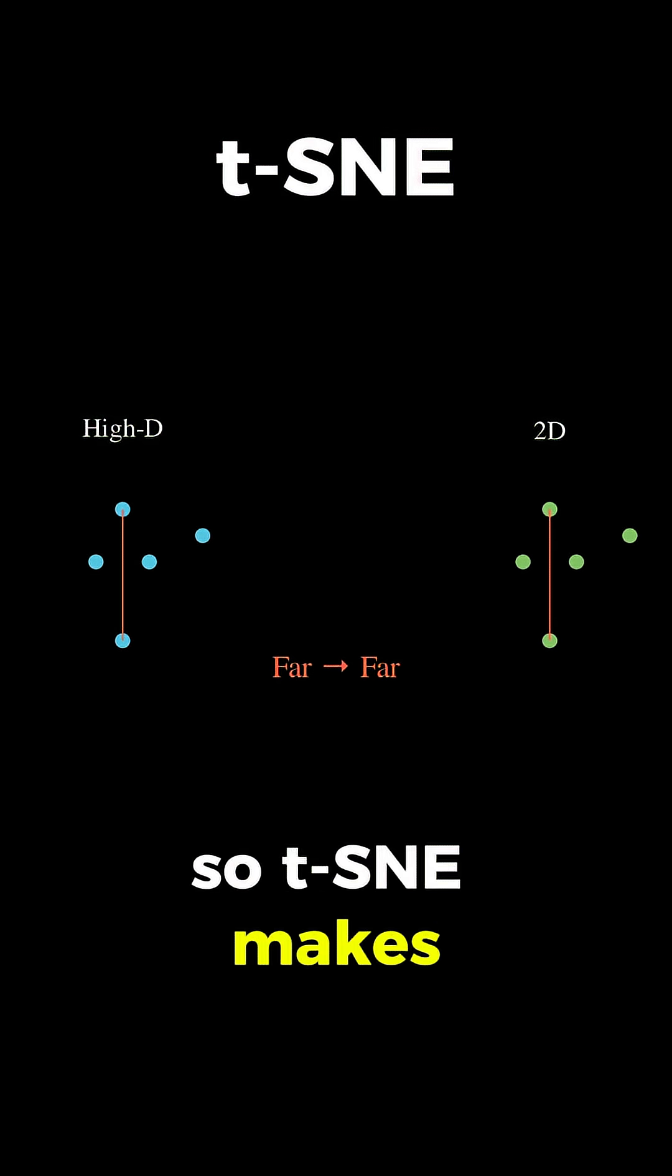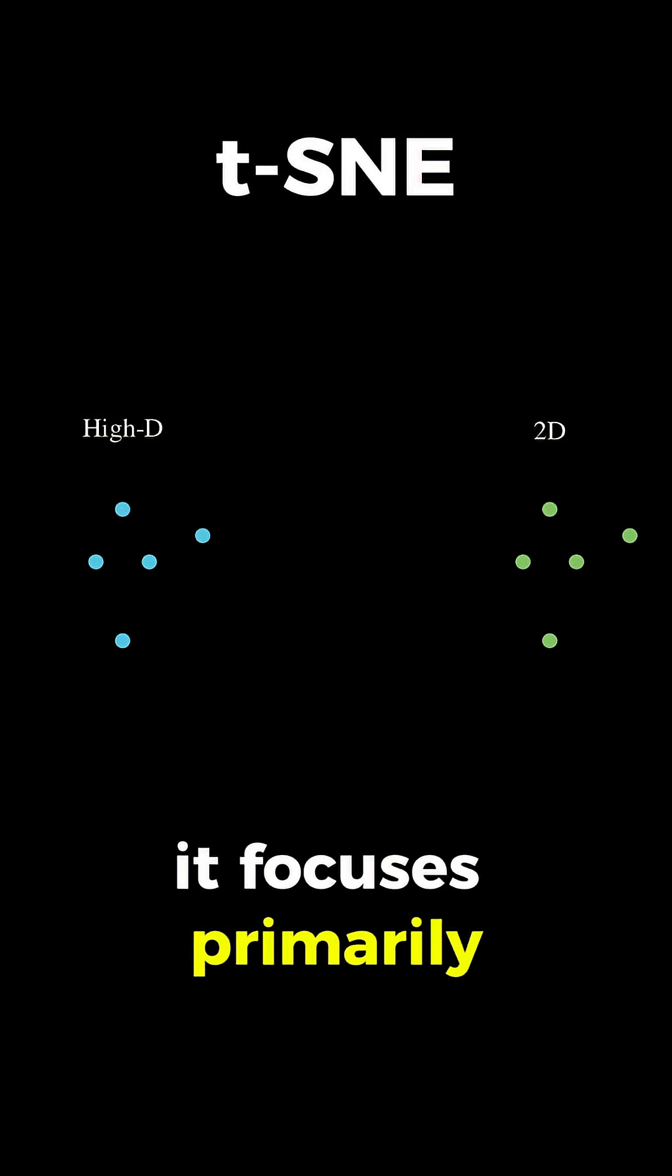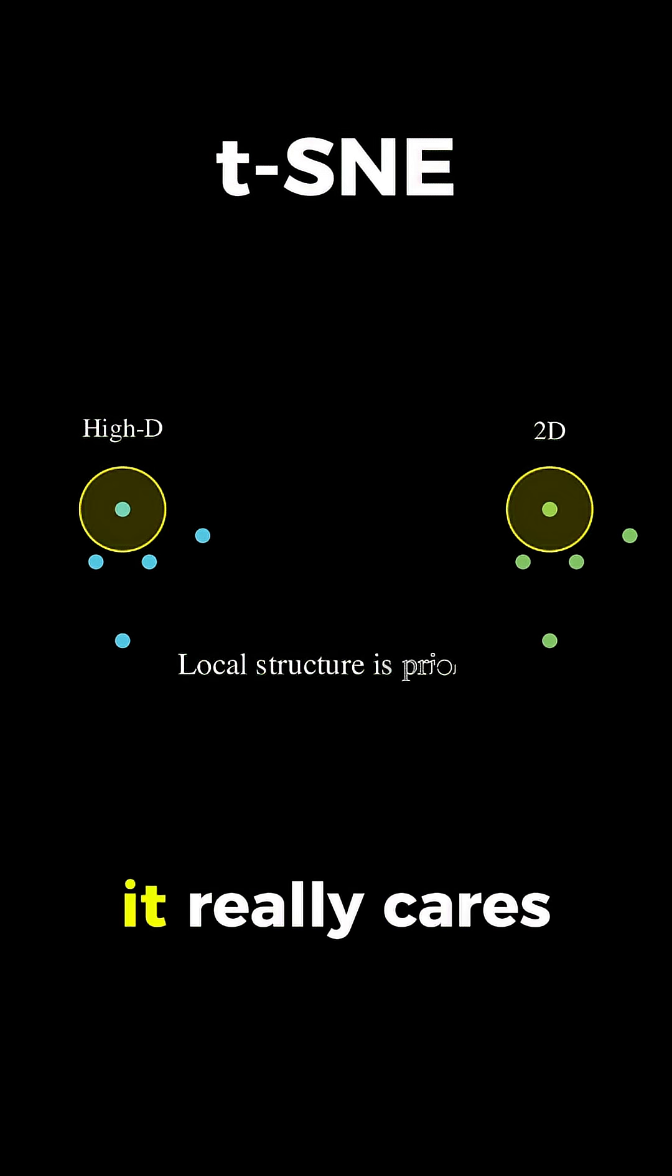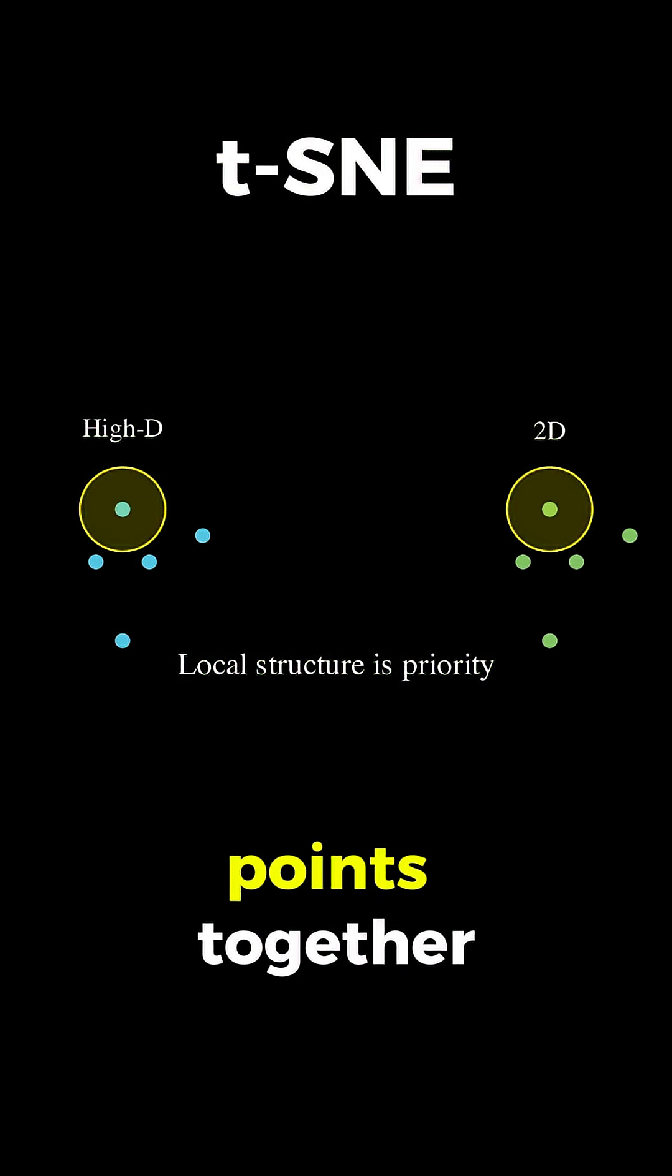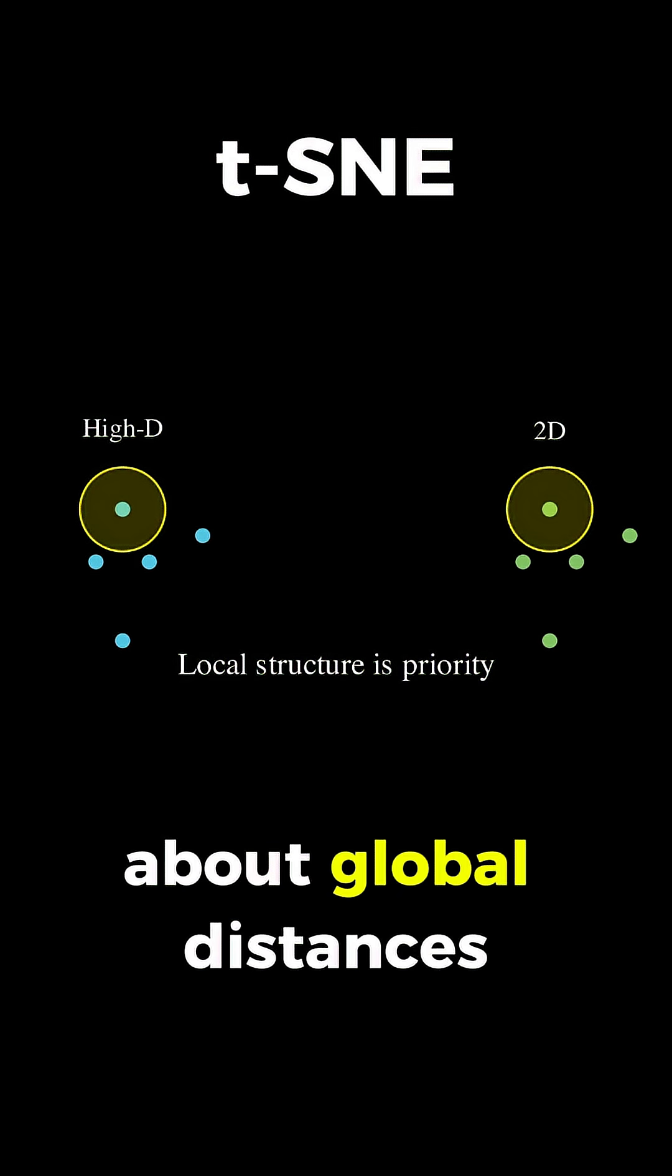So t-SNE makes a choice: it focuses primarily on preserving local structure, meaning it really cares about keeping nearby points together while being a bit more flexible about global distances.